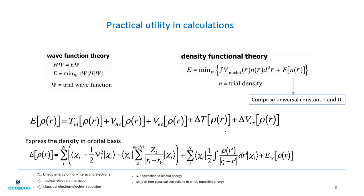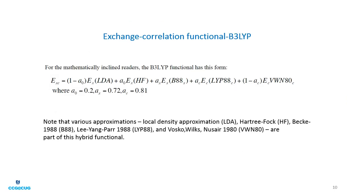Each iteration we solve for orbitals, compute a new density, and feed that density back into the equation. The exchange-correlation part is the most crucial component — it contains all the connection terms from kinetic energy, nuclear-electron interaction, electron-electron interactions, and also includes some piece of kinetic energy and electron-electron corrections as the equation states.